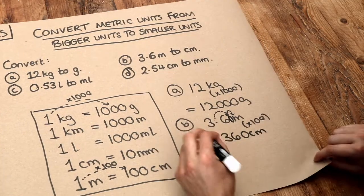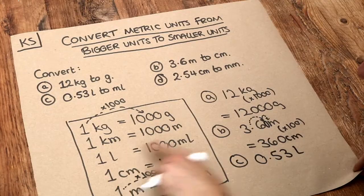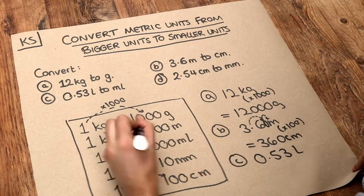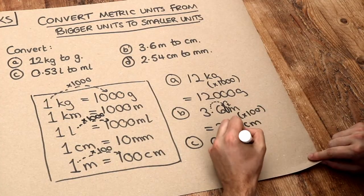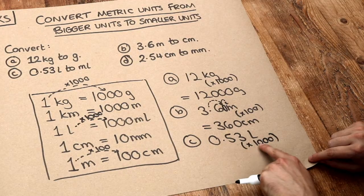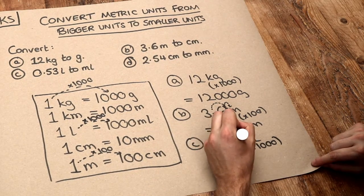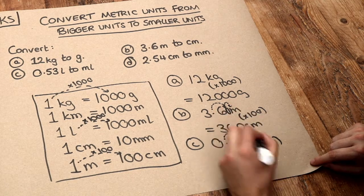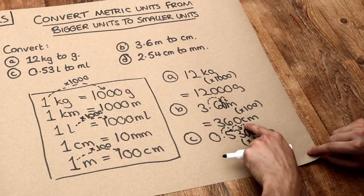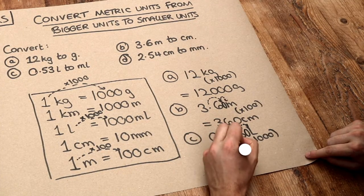What about C? We've got 0.53 litres. Now to get from litres to millilitres, we're timesing by a thousand. So we've got to times this by a thousand. And that's going to move the decimal point three places because that has three zeros. So one, two, and then we've run out of digits. So we're going to have to put a zero on the end and then three. So the decimal point is just after the zero. We have 530 millilitres.